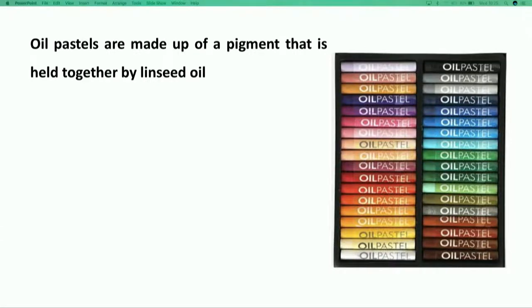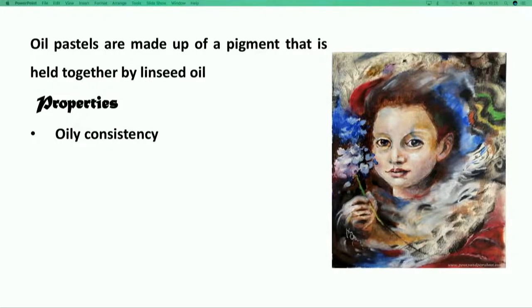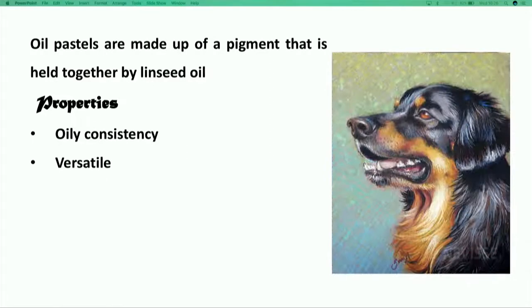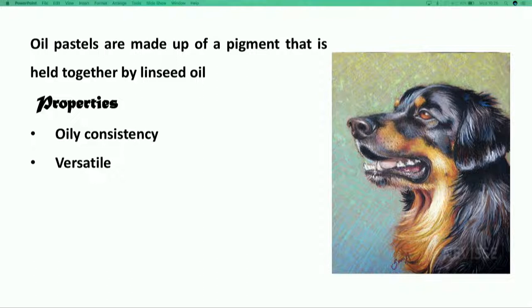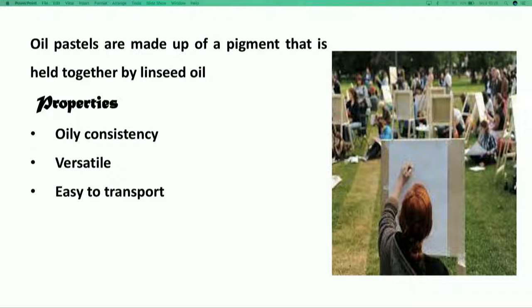Oil pastels are made up of a pigment that is held together by linseed oil. Some properties of oil pastels are: they have an oily consistency that produces a painterly effect. They are incredibly versatile and can be used to draw in oil or acrylic color. It is an easy medium to transport so that sketches and paintings can be done anywhere.